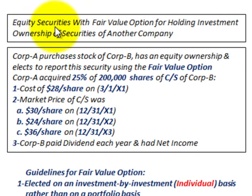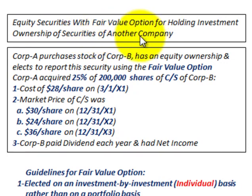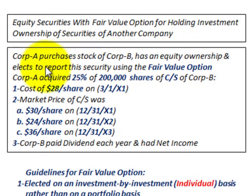What we're going to be going over here are equity securities with the fair value option for holding an investment — ownership of securities of another company. For example, Corporation A purchases the stock of Corporation B, they're going to have equity ownership in the company, and they elect to report the securities — the stock of Corporation B — using the fair value option.